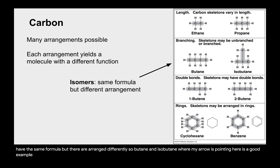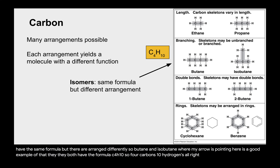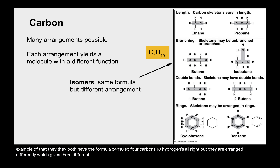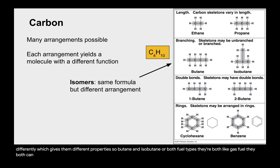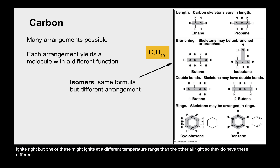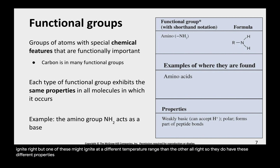Butane and isobutane are a good example of isomers — they both have the formula C4H10, four carbons and ten hydrogens, but they are arranged differently, which gives them different properties. Both are fuel types that can ignite, but one may ignite at a different temperature range than the other, illustrating those different properties.